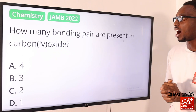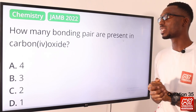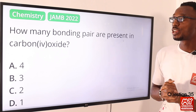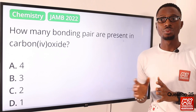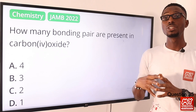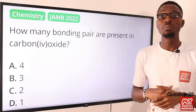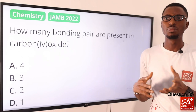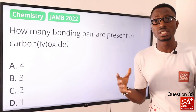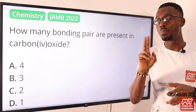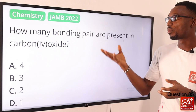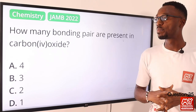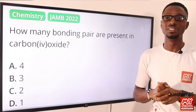Question 35. How many bonding pairs are present in carbon dioxide? For CO₂, we have four bond pairs. The shape is actually linear, with a bond angle of 180°. When it comes to the type of covalent bond, that is a double bond. So how many bond pairs do we have? We have four bond pairs. So option A is the right option.